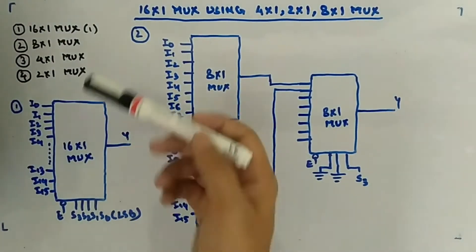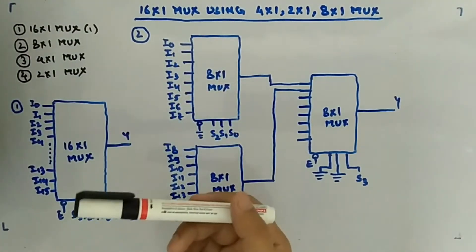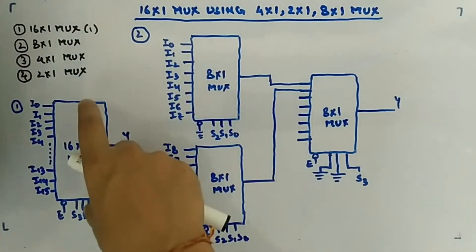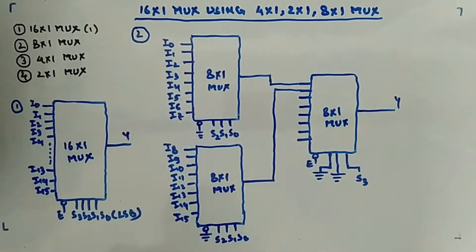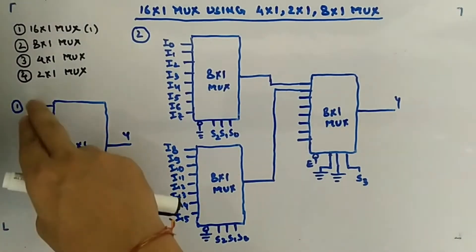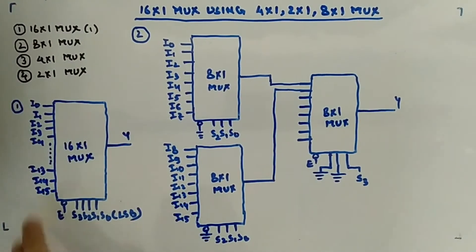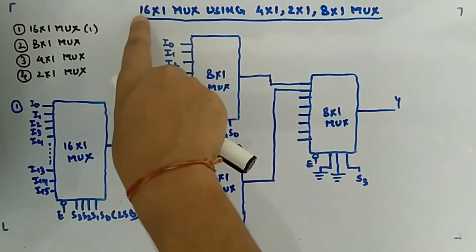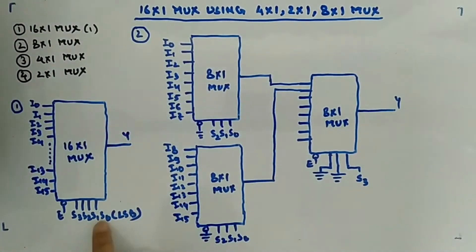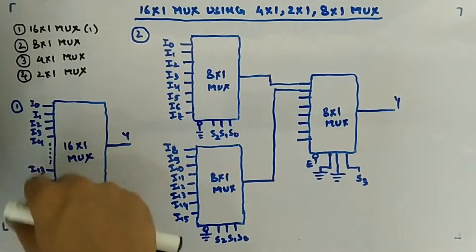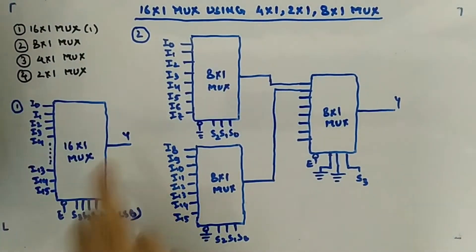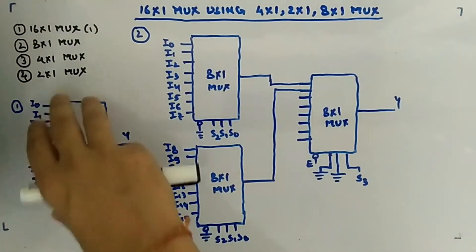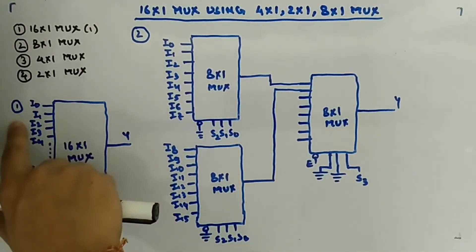The first method is to use a single 16:1 MUX alone. You can see I0 to I15 inputs are given, with select lines S3, S2, S1, S0 where S0 is the LSB. There are four select lines because two to the power four is 16, giving 16 inputs and one fixed output Y.